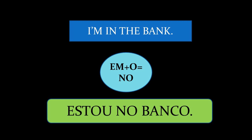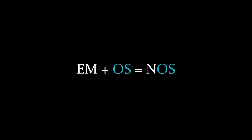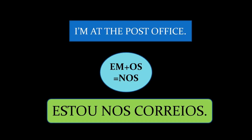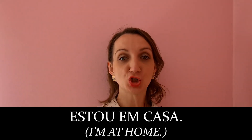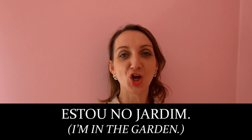Another example is post office — 'I'm at the post office.' Post office in Portuguese is 'os correios.' The preposition 'em' joins together with the article 'os,' giving us 'nos': 'Estou nos correios.' More examples: 'Estou em casa.' 'Estou no escritório.' 'Estou no jardim.' 'Estou na sesta.'